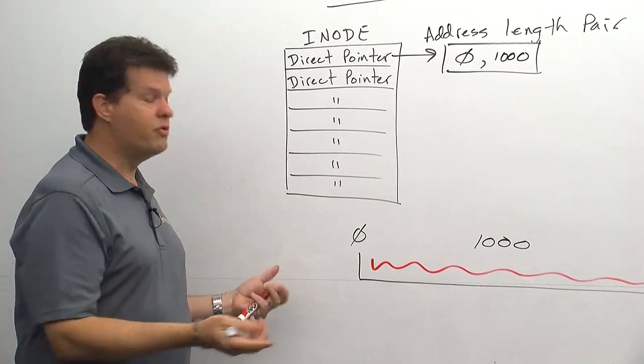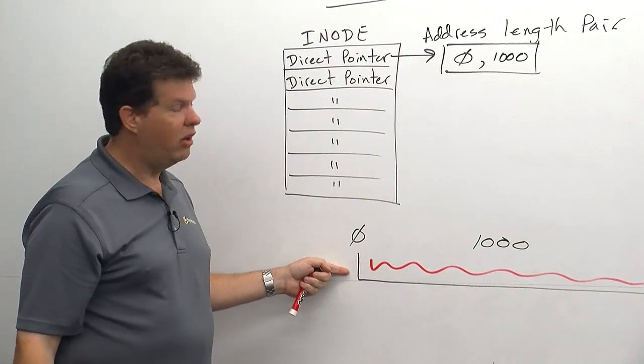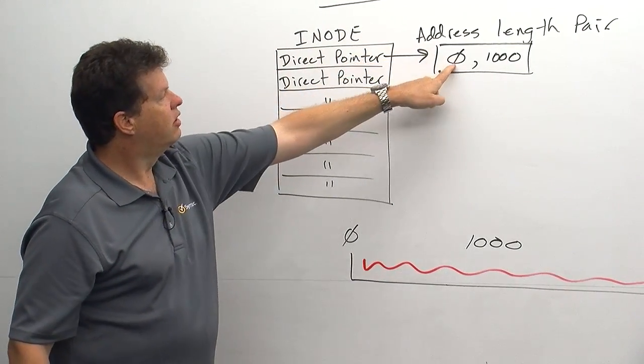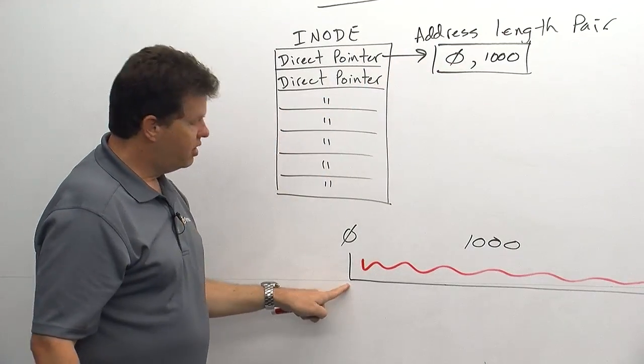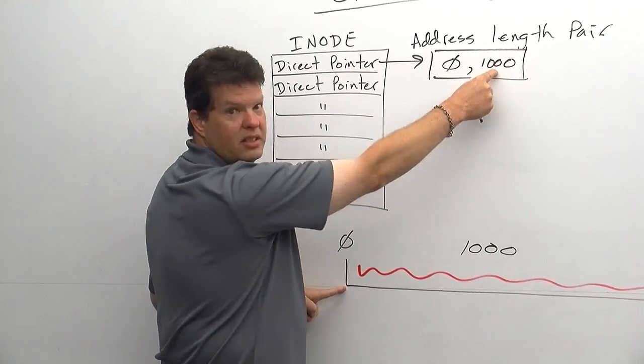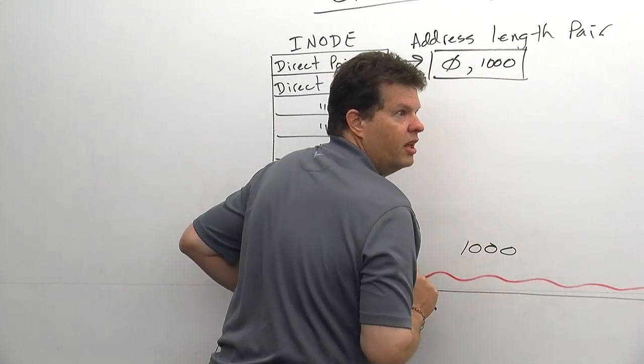So let's say this is a thousand blocks long. So we're going to have a thousand blocks listed in here. So when we need to go out there and retrieve information from this file, we go to the inode for that file, read the direct pointer to it, find the starting block address, seek to that starting address, and then read the next X number of blocks listed here into memory. And we get the file.